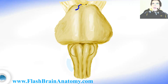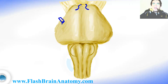We can find one nerve here in the interpeduncular fossa — it is called the oculomotor nerve. Here we can find the trigeminal nerve, and the same on the other side. We can also find the motor root of the trigeminal nerve, and the same on the other side.